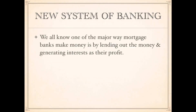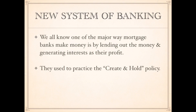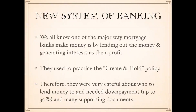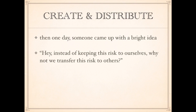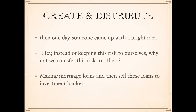One of the major ways banks make money is by lending out money and generating interest as profit — using money from your fixed deposits. They used to practice a 'create and hold' policy: they created the loan and held it as an investment. Therefore they were very careful about who to lend money to, requiring down payments sometimes up to 30% and many supporting documents. But one day somebody came up with a bright idea: instead of keeping this risk to ourselves, why not transfer it to others — by making mortgage loans and then selling them to investment bankers?